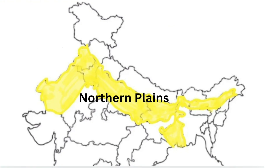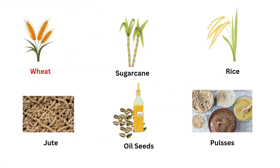The Northern Plain is one of the largest and most fertile plains of the world. Major crops grown here include wheat, sugarcane, rice, jute, oilseeds, and pulses.